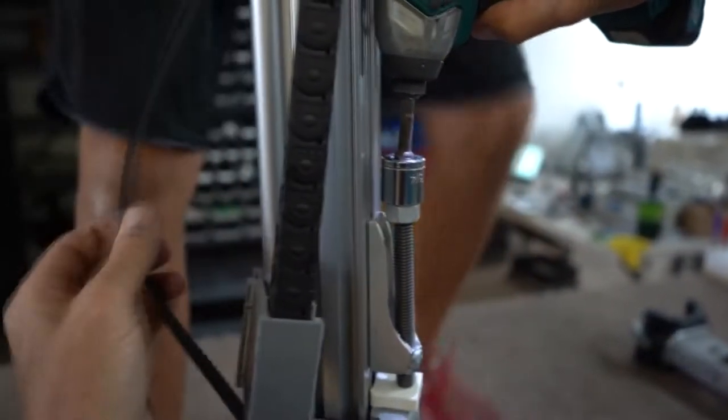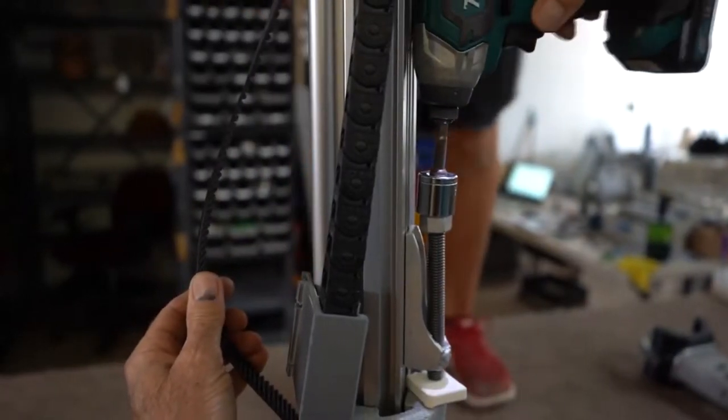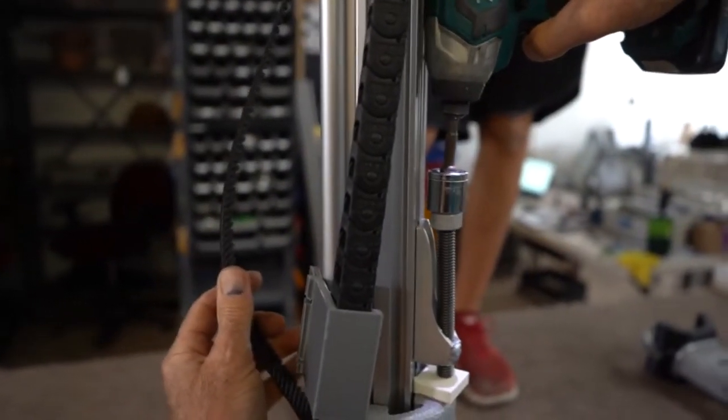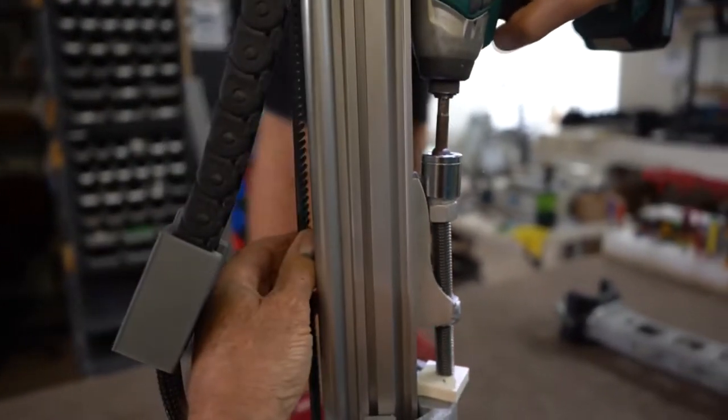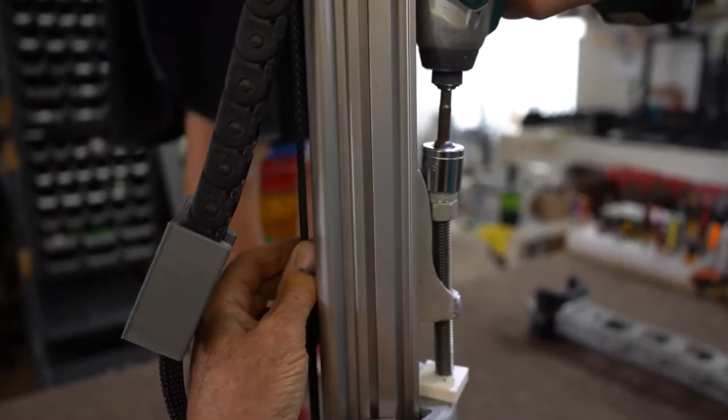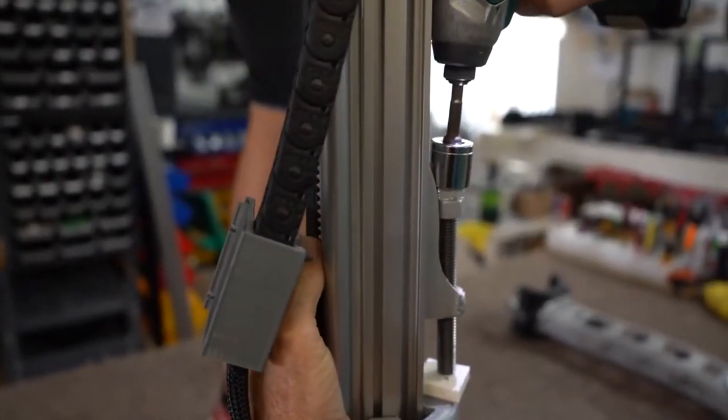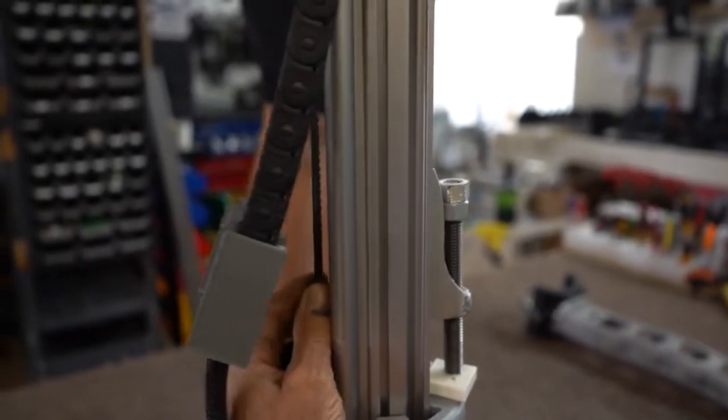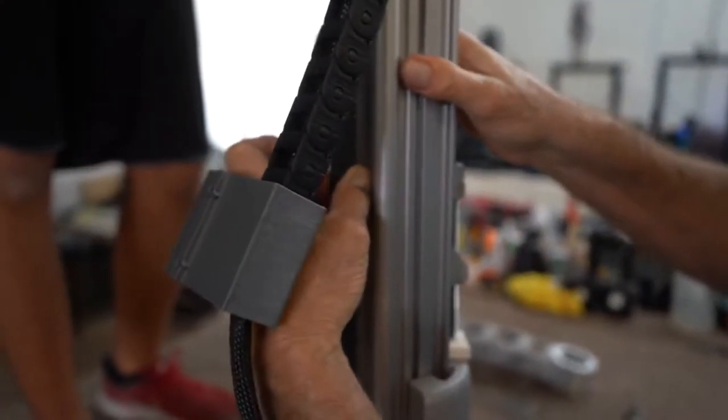We will now use the belt tightener to increase the tension on the Z-belt. Under pressure, the belt should be relatively tight. It should be able to flex about a quarter of an inch in each direction.